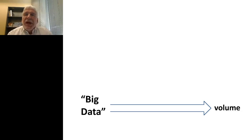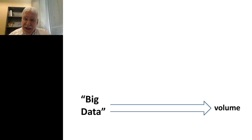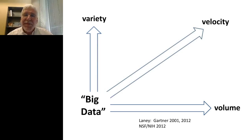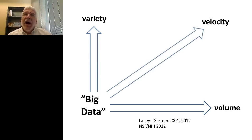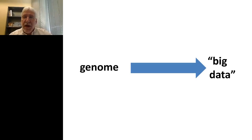But it's clear that big data — especially meaningful use of big data — not only embraces the volume of data but also the variety of the data, as well as the velocity: the interconnection and changes in data over time. To truly embrace cancer as a big data problem, we need to manage large volumes, understand its diversity, and figure out how it changes — sometimes rapidly — over time.